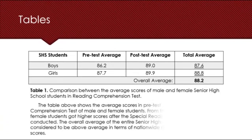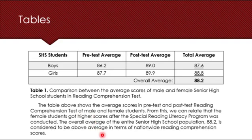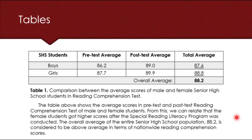For the interpretation part, you can interpret this table this way: 'The table above shows the average scores in pre-test and post-test reading comprehension of male and female students. From this, we can see that female students got higher scores after the special reading literacy program was conducted. The overall average of the entire senior high school population, 88.2, is considered above average in terms of nationwide reading comprehension.' This interpretation will be based on your research objectives.